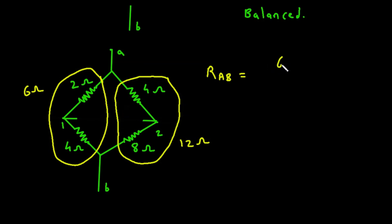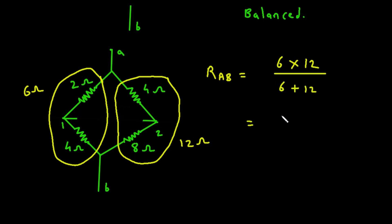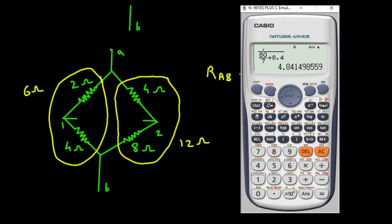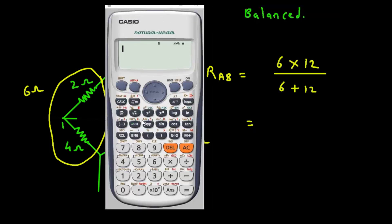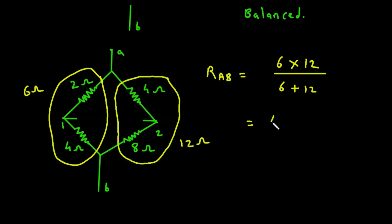Now we can write 6 Ohm parallel with 12 Ohm. So it will be 6 into 12 divided by 6 plus 12. Let's solve this in a calculator: 6 into 12 divided by 6 plus 12 is 4 Ohm. Therefore, the value of RAB is 4 Ohm.